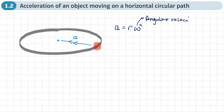And if we have the linear velocity, then the acceleration is going to be equal to V squared over R, where V is the linear velocity.